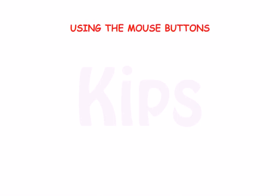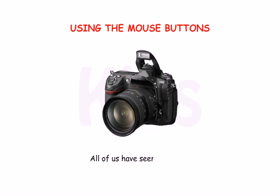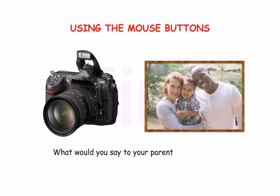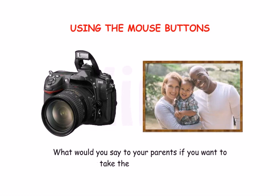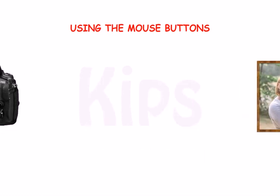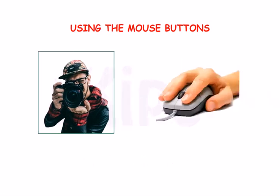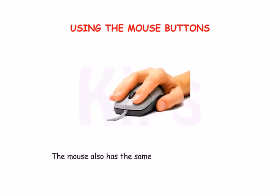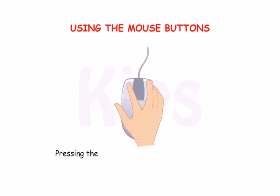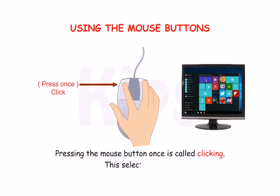Click the mouse button. Let me tell you how to use the mouse buttons. All of us have seen a camera. What would you say to your parents if you want to take their photograph? The mouse also has the same function — clicking. Pressing the mouse button once is called clicking. This selects an item.